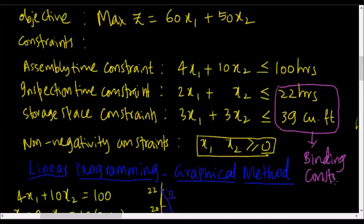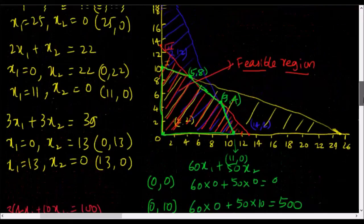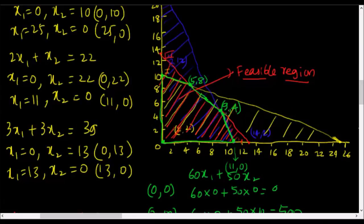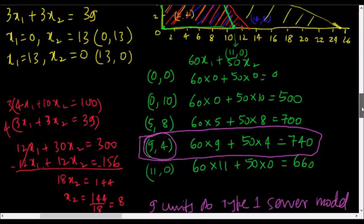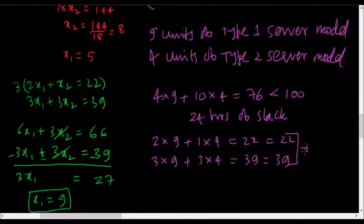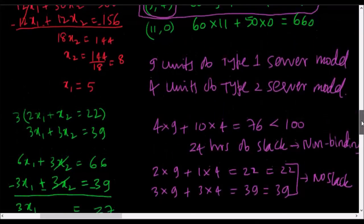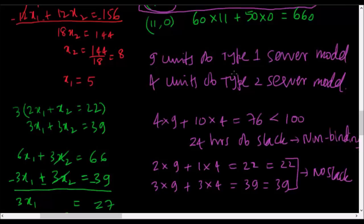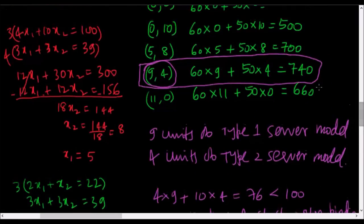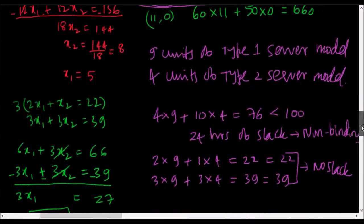From the graph we can observe that the second and third constraints were the ones that gave us the optimal point — whichever constraints produce the optimal point are called binding constraints, because there is no slack. The first constraint has 24 hours of slack, so it is a non-binding constraint. In summary, I have to manufacture 9 units of type one server and 4 units of type two server, yielding a maximum profit of $740. Thank you for watching — if you like the video, press the thumbs up button!